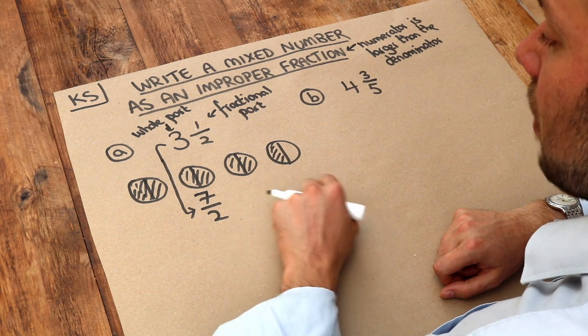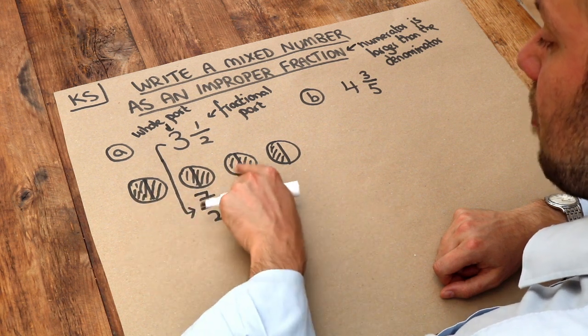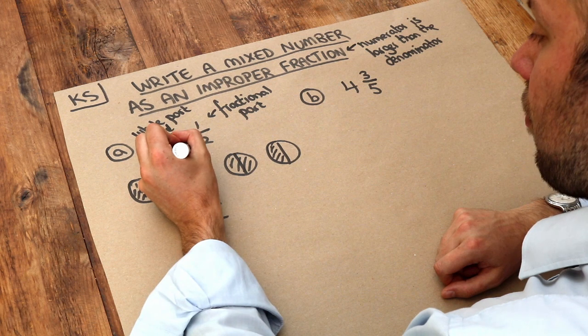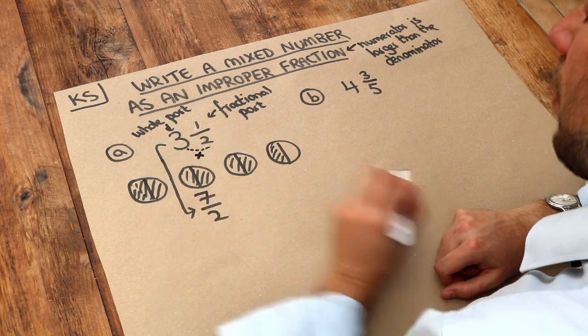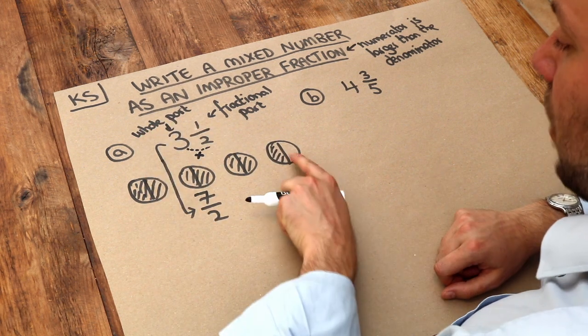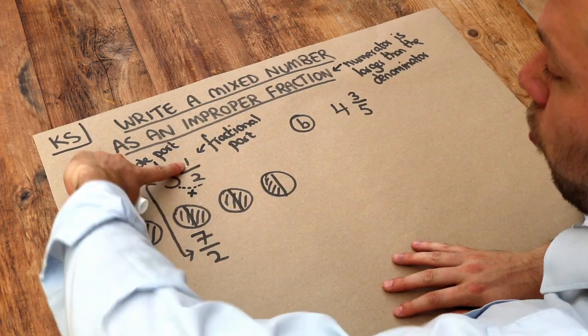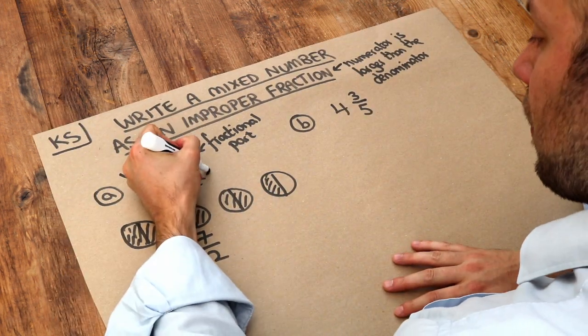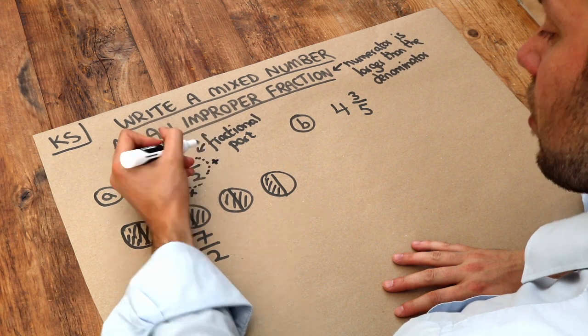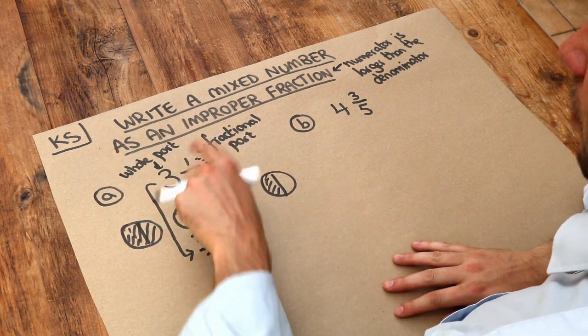So we therefore did three times two to get these six pieces here. So we did that three multiplied by that two. And then we had an extra one pizza. So we added on that extra one half here. So we therefore add that one up here.